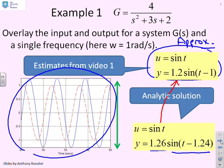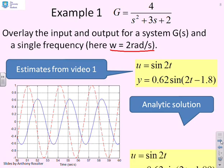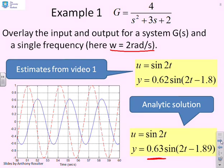Our approximation 1.2 was pretty close to 1.26. The phase was a bit further out, but the estimate used in video one was very crude, though at least in the right ballpark. For ω = 2 rad/s, our estimate was 0.62·sin(2t - 1.8) and the analytic solution 0.63·sin(2t - 1.89). The estimates were fairly close to exact values, and the computation to get exact values is relatively straightforward, so why not do it?